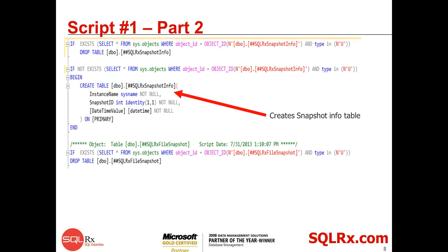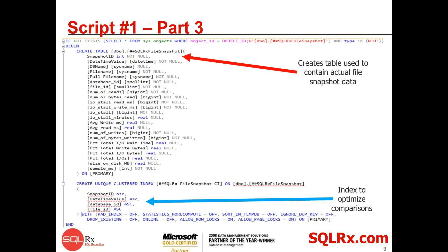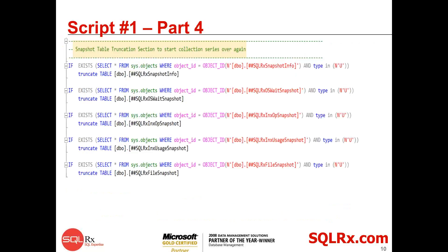The next table actually contains the snapshot data. In this case it's all I/O related, and you'll see there's a good mapping between the file stats DMF and what's in this table. I put a clustered index on it because I wanted it to be fast when I do the comparisons and not distort the system, especially if I'm doing lots of samples over a long period of time — for a whole day's worth of benchmarking or production. The last part of the script clears out all the tables for the snapshots, and it also gives you an example of some other things I collect in terms of OS waits, index usage, index operations, and things of that nature — all things you can watch on the fly.